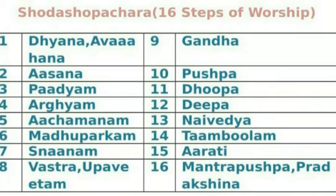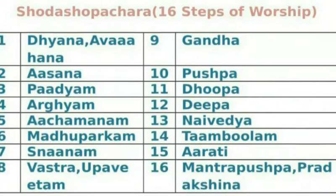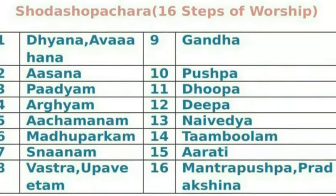Number 1 is Dhyana Avahana. According to this, we have to do meditation and invite God. Whatever God you want to worship, first we have to do meditation and invite the God. The second step is Asana — we have to place a chair or offer a seating position for the God. That is called Asana.